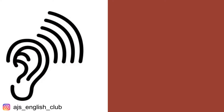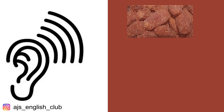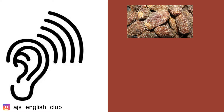Hello beautiful people, once again, and welcome back to AJ's English Club. Today we are going to look at one vocabulary word, and I think this is very important to learn. When we see dry dates — dates that dry — there is one specific word to call these dates, and the word is 'prune.' We call them prune dates.